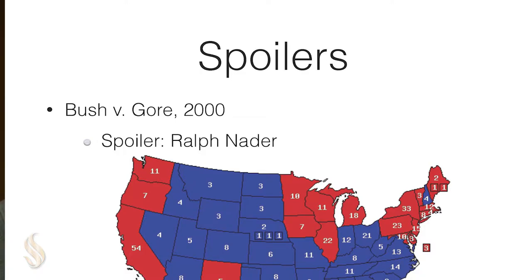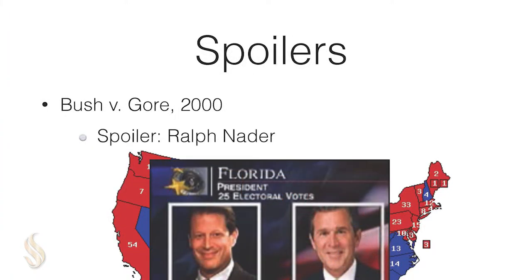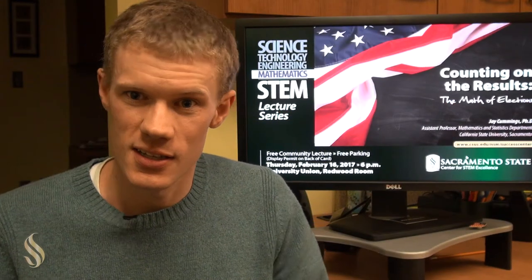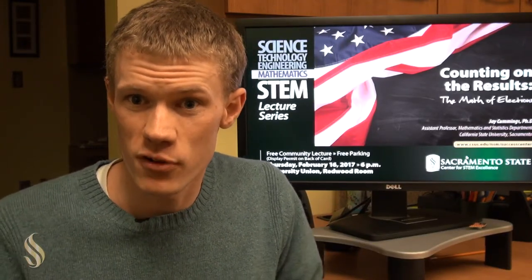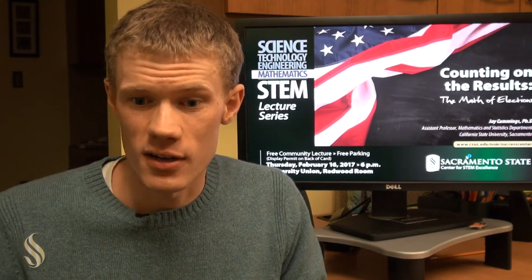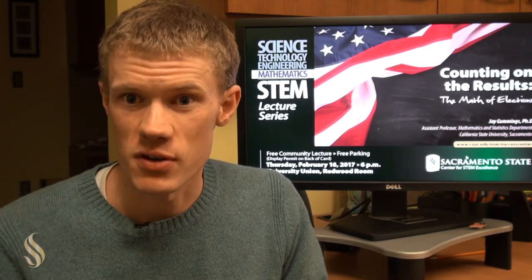Our current elections are run like this: you show up at the voting booth and the ballot asks you a question — who do you most want to vote for? You look at the list of candidates; in this election there were four major candidates. You check the box for who you most prefer, go home, and wait for the results to see who got the most first-place votes.